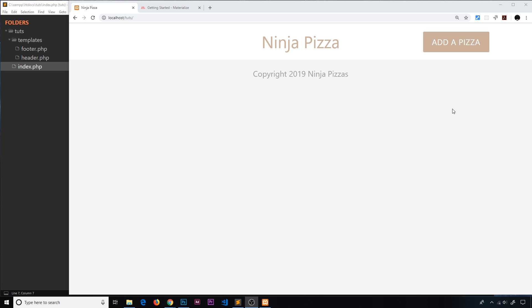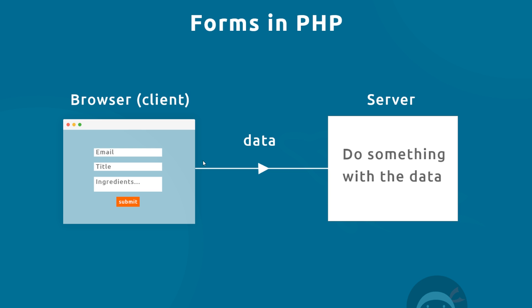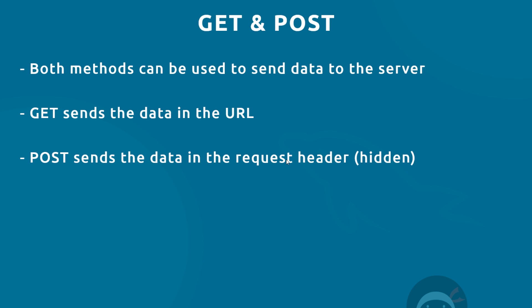On our website we're going to have a web form to take in the user's data to make a new pizza — the email, the title, and the ingredients. When they click submit, we want to send that data to the server to do something with it, like save it to a database. The way we send data from the browser to the server is via two different methods used with HTML web forms, called GET and POST.